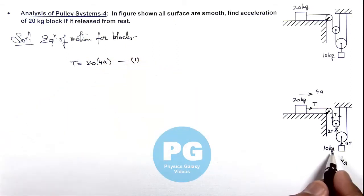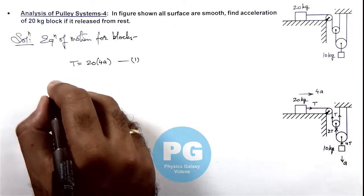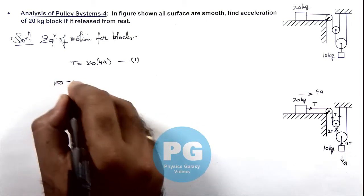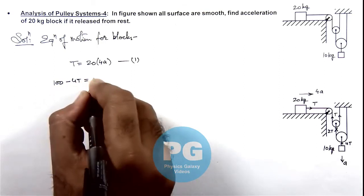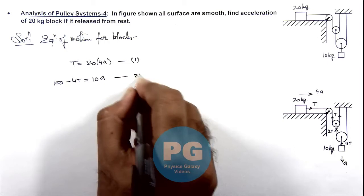For 10 kg block, downward its weight is acting and upward the tension in string on it is 4T. So we can write this as 10 kg, that is 100 minus 4T, equals 10ay. This is our second equation.